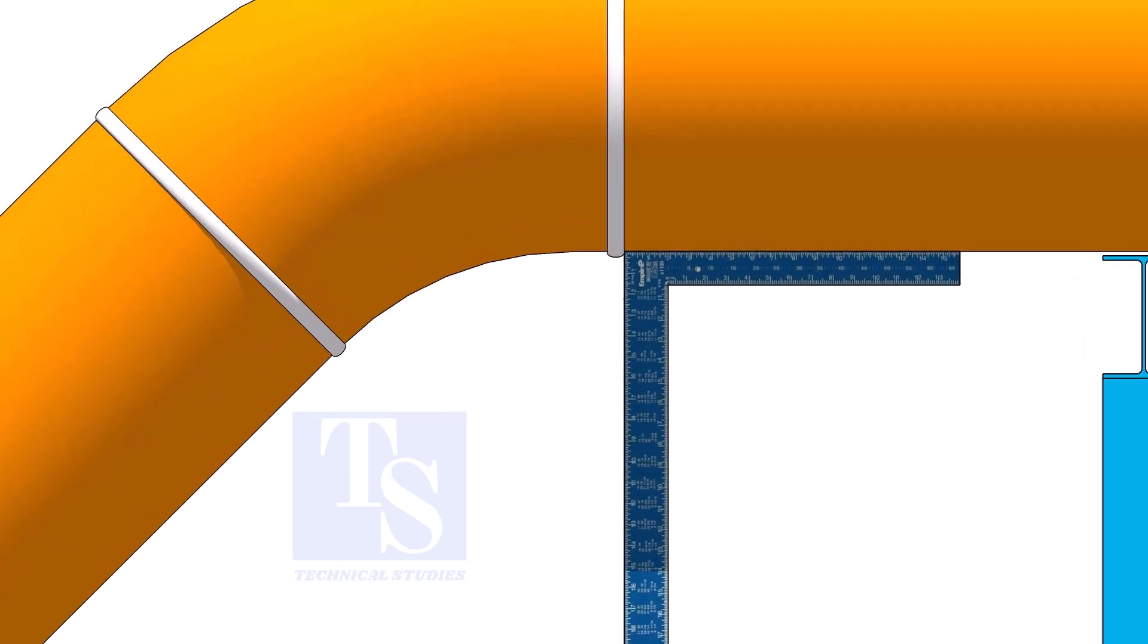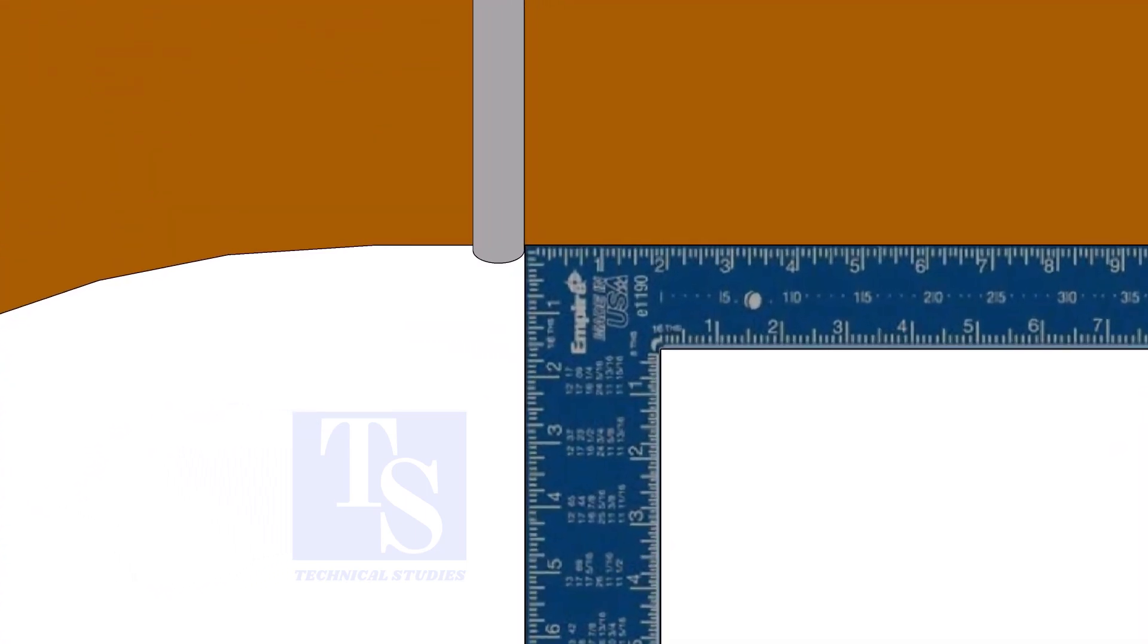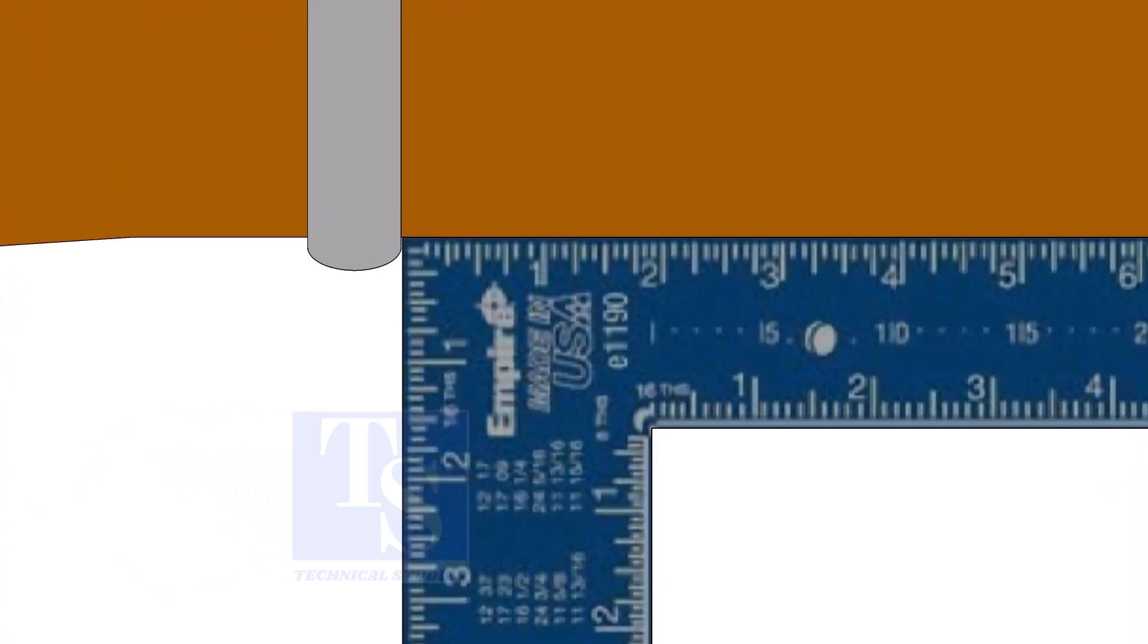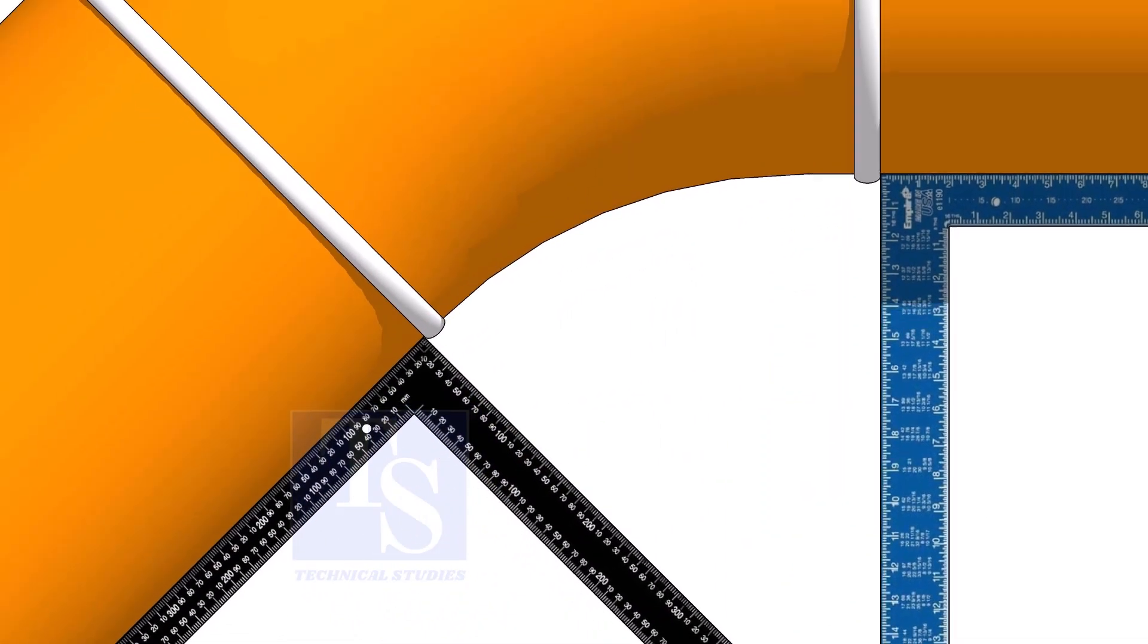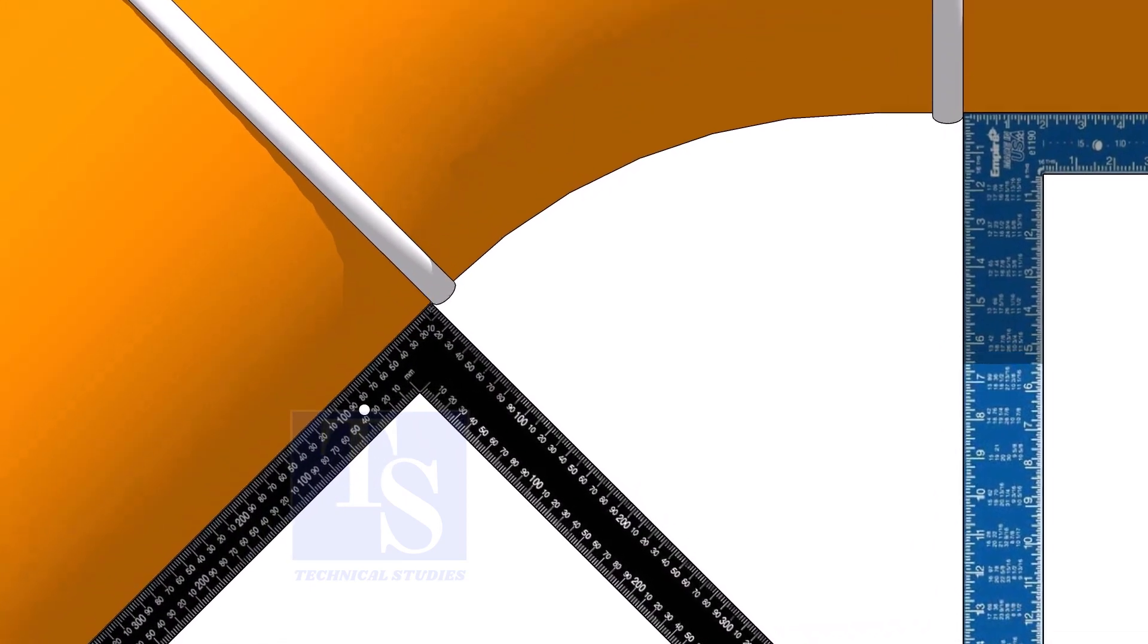Hold one right angle on the pipe just outside the weld joint, as shown. Hold another right angle on the other pipe. Make sure both the right angles are sitting on the center of the pipe.